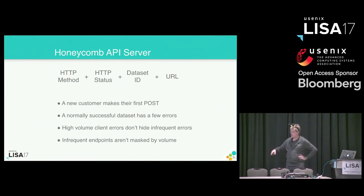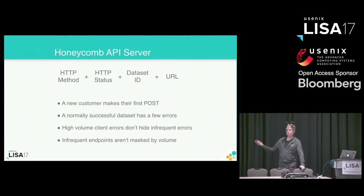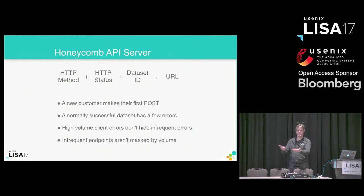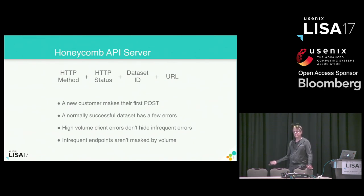The most important thing from the business perspective is being able to understand on a per-customer basis what their user experience is like. There are also a few signals we toss in for ourselves — user agent, for example. It's helpful to know when somebody sends us a little bit of data what platform they're coming from. User agent is not one of the elements I chose to differentiate traffic because within a dataset it's pretty consistent — that level of specificity has already been achieved.